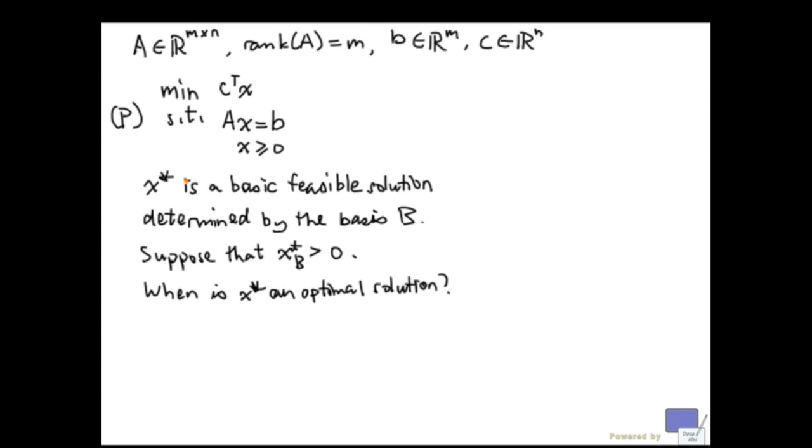If we are given a basic feasible solution, say x star, determined by the basis b, when is it an optimal solution? And we'll simplify our discussion a bit by assuming that all the entries indexed by b are positive. Remember that in a basic feasible solution, only the variables indexed by elements of b can be non-zero. The rest have to be zero.